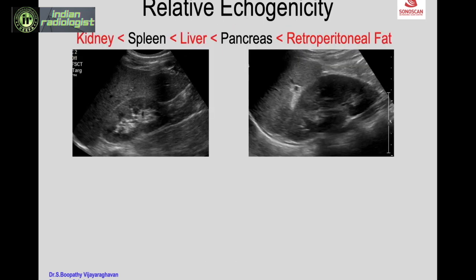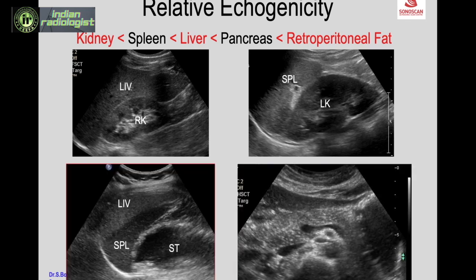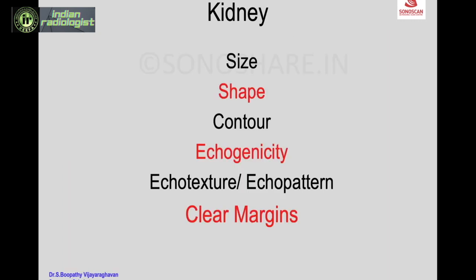Regarding echogenicity of the renal parenchyma: the relative echogenicity of abdominal structures is as follows — the kidney is less echogenic than spleen and liver; spleen is less echogenic than liver; pancreas is more echogenic than liver and spleen; and the retroperitoneal fat is the most echogenic.